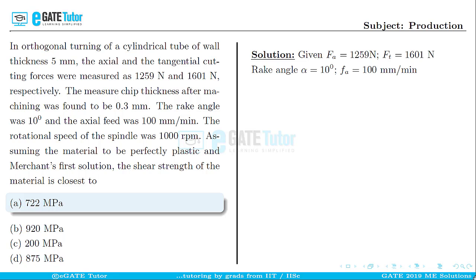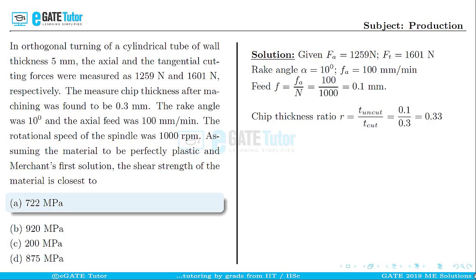The next step is to calculate the feed: f = axial feed divided by spindle speed = 100 divided by 1000, which gives f = 0.1 mm. The next step is to calculate the chip thickness ratio, given as r = uncut chip thickness divided by cut chip thickness. The uncut chip thickness is taken directly as the feed f, and the cut thickness is given as 0.3 mm.